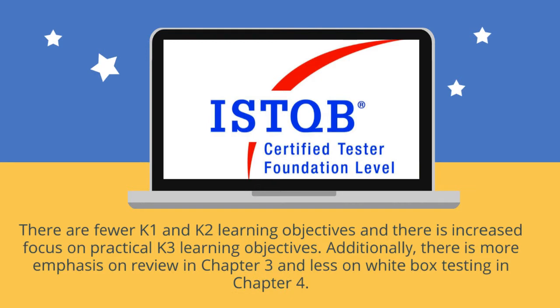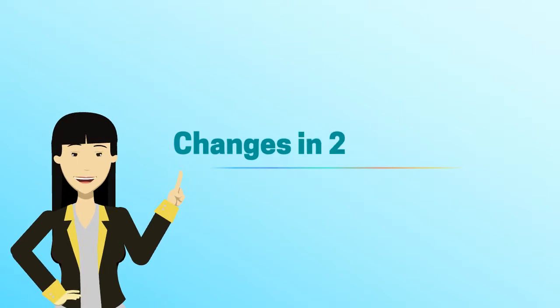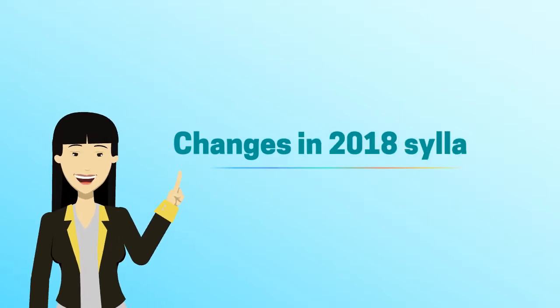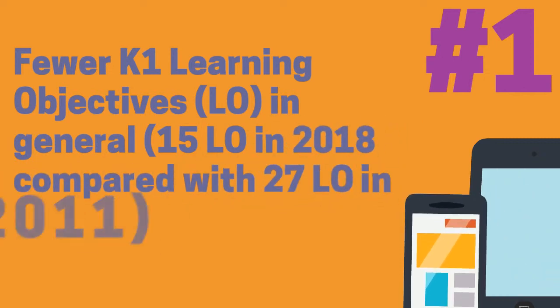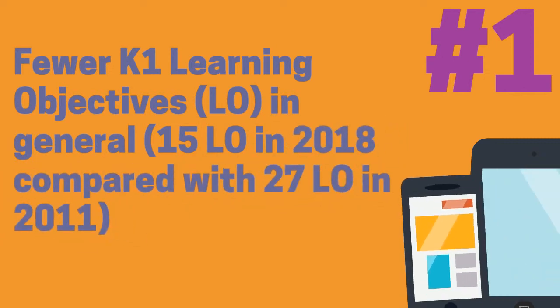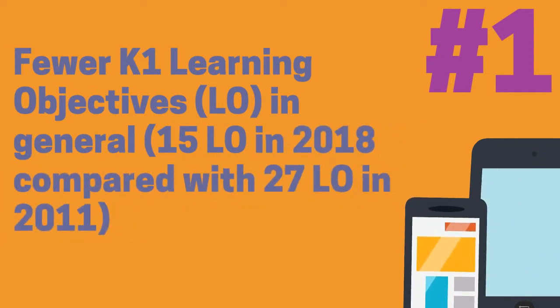Additionally, there is more emphasis on review in chapter 3 and less on white box testing in chapter 4. Now let's see the list of topics changed in the 2018 syllabus. Fewer K1 learning objectives in general: 15 learning objectives in the 2018 syllabus, compared with 27 learning objectives in the 2011 syllabus.